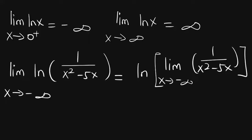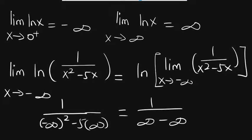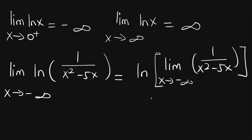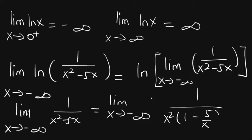Until we know the value of the argument, we can't tell whether the fact is violated. So we need to compute the limit in the brackets. For direct substitution, we get 1 over ((-∞)² minus 5×(-∞)), which gives 1 over (∞ minus ∞), an indeterminate form. So we need another approach. We compute the limit as x approaches minus infinity of 1 over (x² minus 5x) by factoring out x²: we get 1 over x² times (1 minus 5/x).